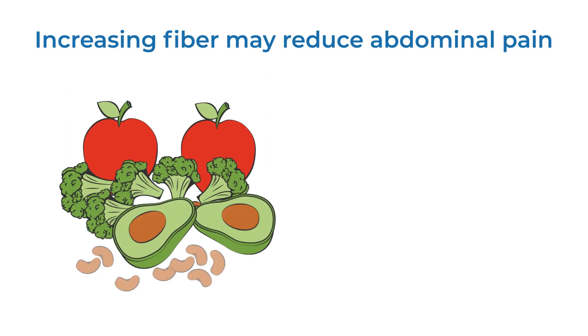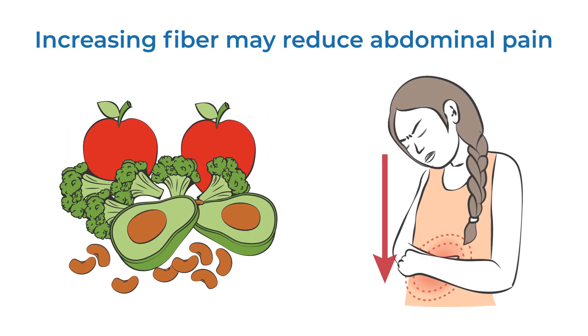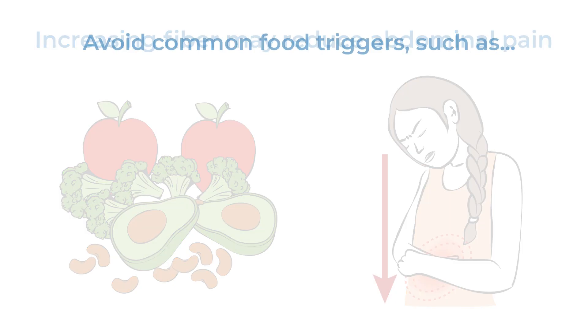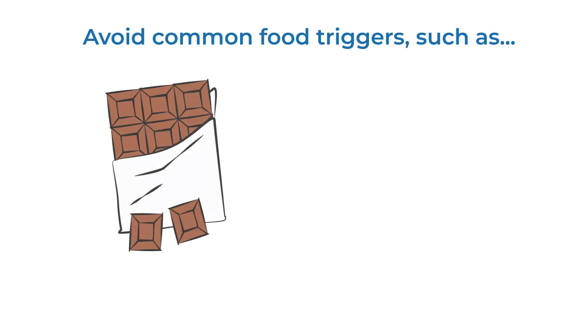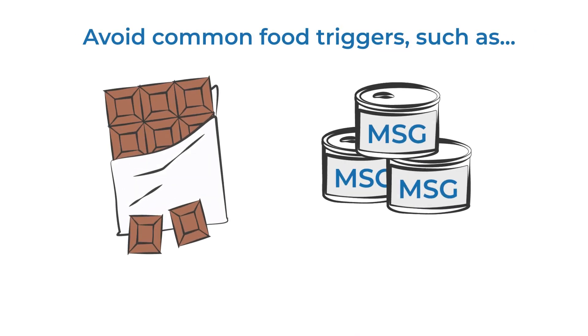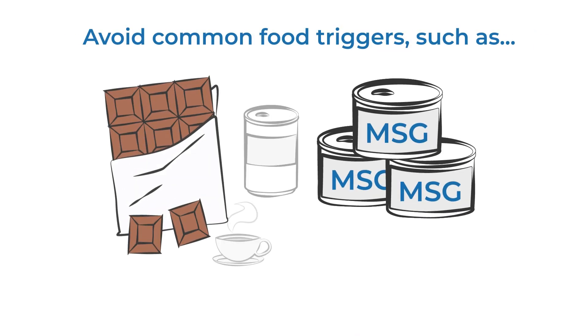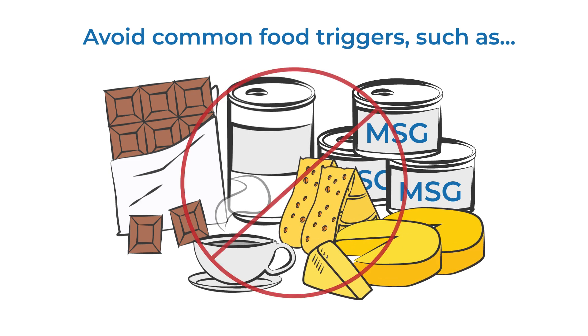Increasing fiber has been shown to reduce the number of attacks of abdominal pain. Avoiding common food triggers such as chocolate, MSG, caffeine, and cheese may also be beneficial.